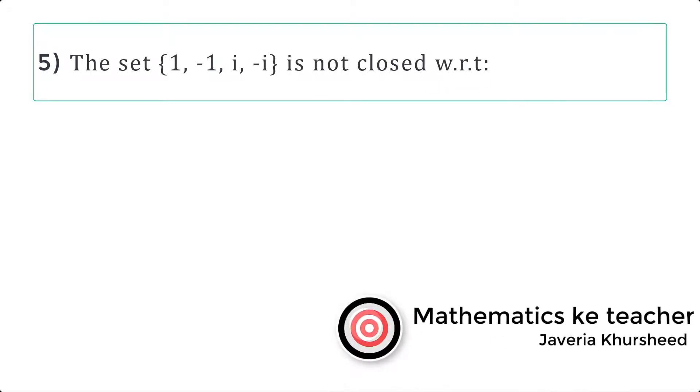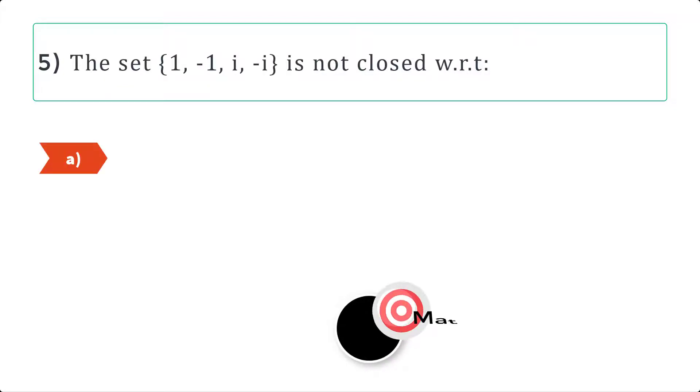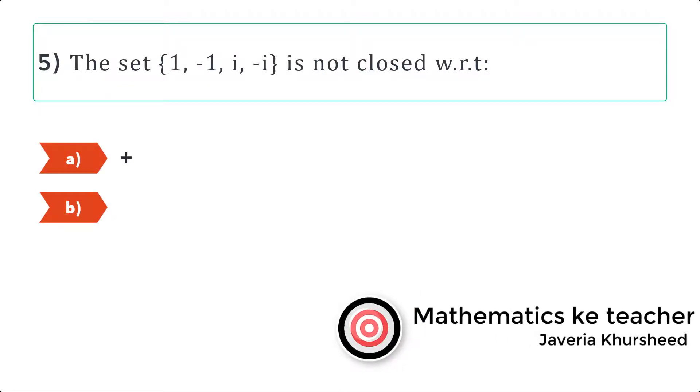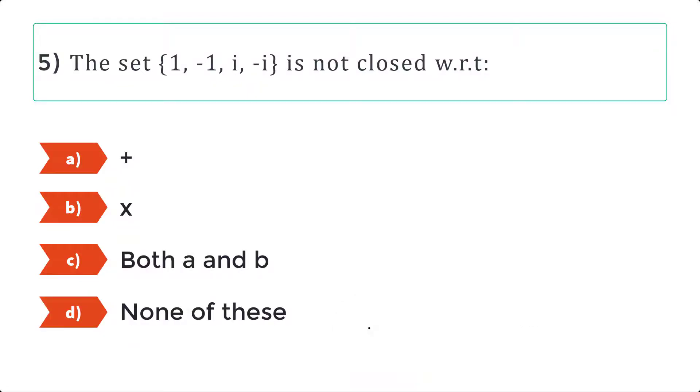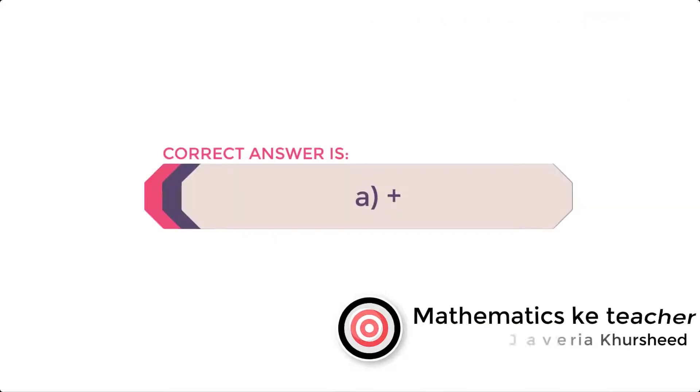Question 5: The set {1, -1, i, -i} is not closed with respect to: A. Addition, B. Multiplication, C. Both A and B, D. None of these. Correct answer is A. Addition.